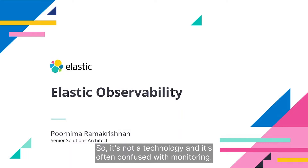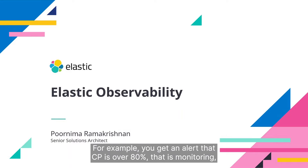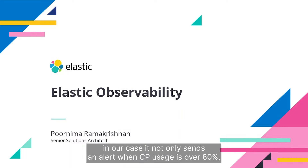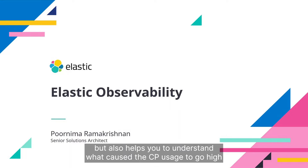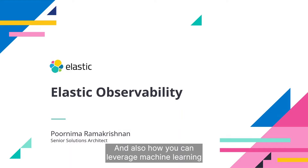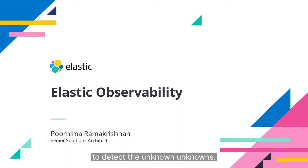Observability is not a technology, and it's often confused with monitoring. Monitoring just tells you only when something goes wrong — for example, you get an alert that CPU is over 80%. But observability helps you to detect the root cause of the problem. It not only sends an alert when CPU usage is over 80%, but also helps you understand what caused the CPU usage to go high, how you can prevent such issues in the future, and how you can leverage machine learning to detect the unknown unknowns.